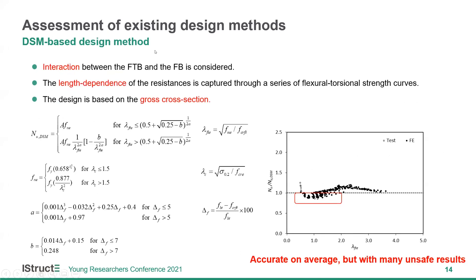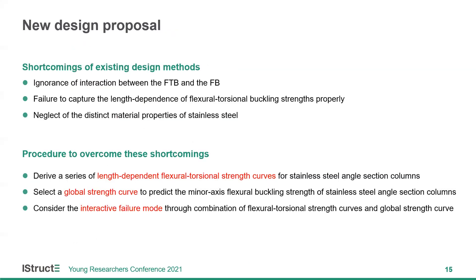We also considered the DSM-based design method. In this method, the interaction between the flexo-torsional buckling and the minor axis flexural buckling is considered through the first equation, where F_NE is the minor axis flexural buckling stress. The length dependence of the failure load is captured by changing the values of A and B in the equation, defining a series of flexo-torsional strength curves. The method can provide accurate strength predictions on average; however, there are many unsafe results because this method was originally developed for carbon steel angle sections and the nonlinear material property of stainless steel is not considered.